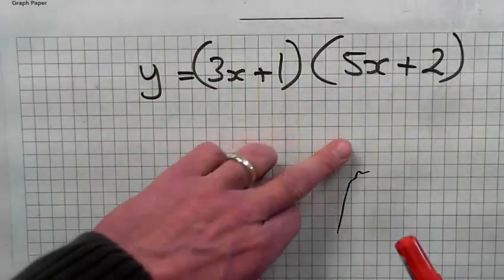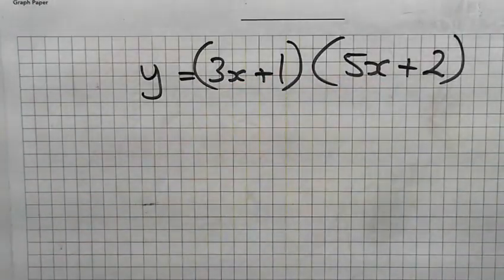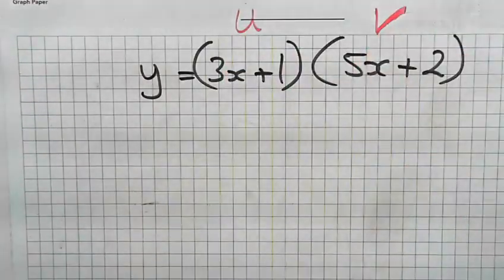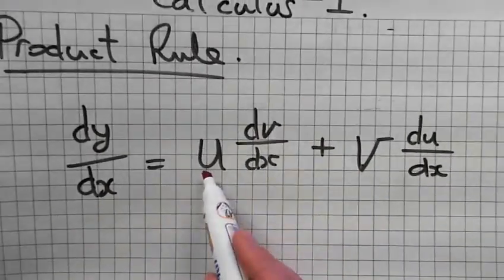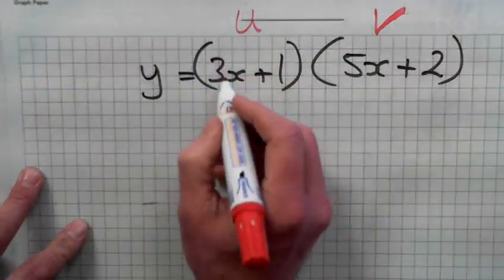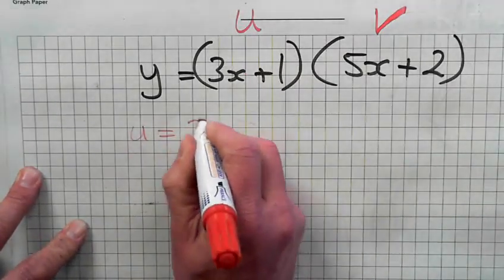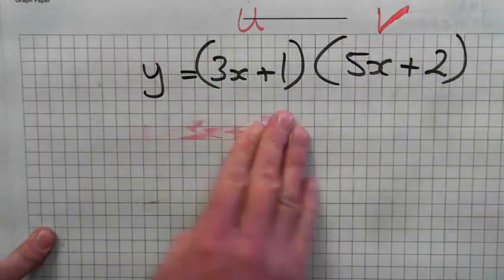I have a function and these two things are multiplied. So the first step is I label the first one u and the second one v. See, I've got a u and a v. U is equal to 3x plus 1.